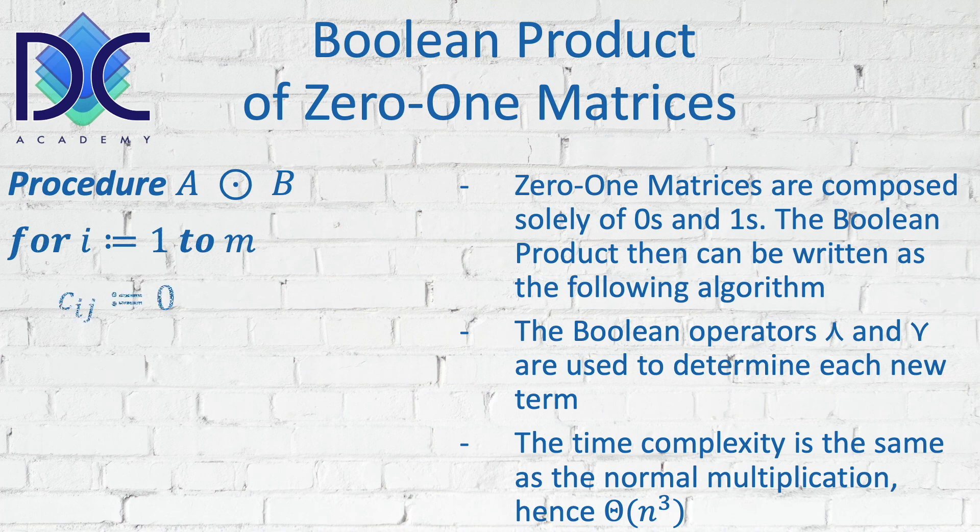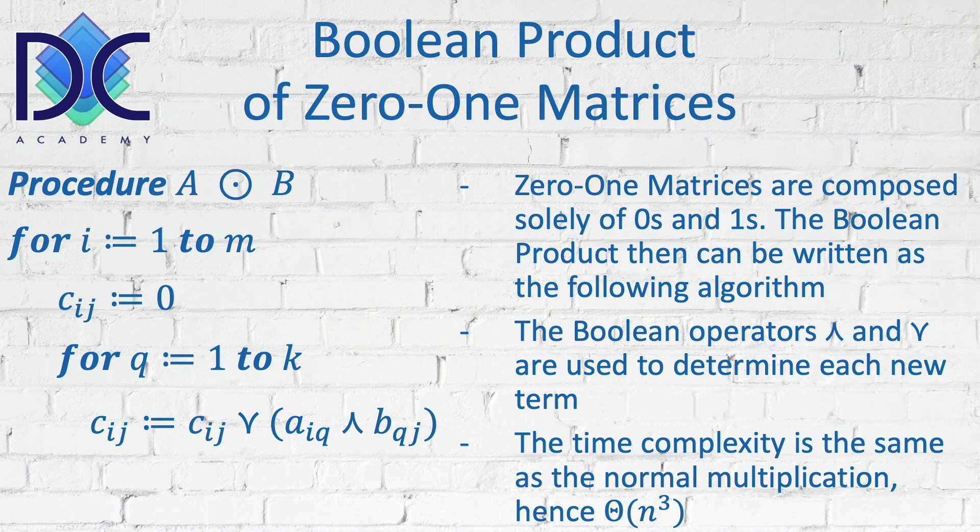Now we have the procedure. Basically, everything is the same here. The only thing that changes is that we have to find the Cij every term.